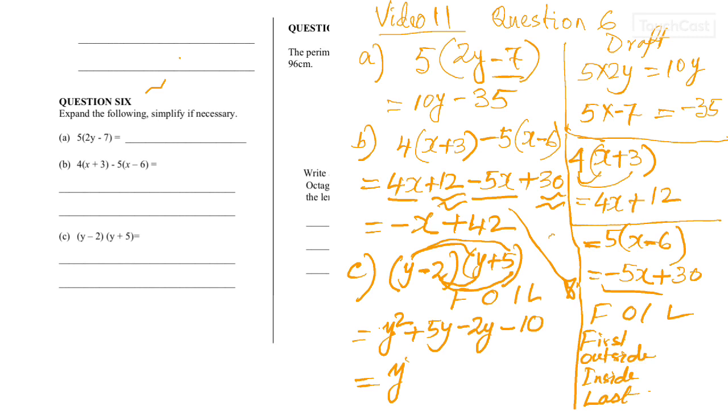So, if I simplify this, that will give me y squared plus 3y minus 10.